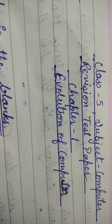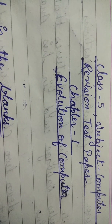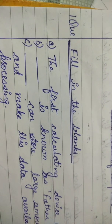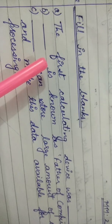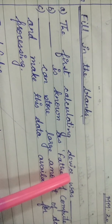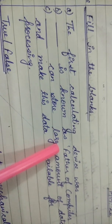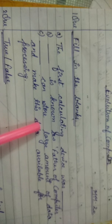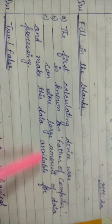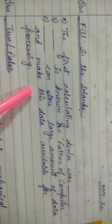This is the first revision test paper of Chapter 1, Evolution of Computer, for Class 5. First question is fill in the blanks. Number one: The first calculating device was ____. Number two: ____ is known as father of computer. Number three: ____ can store large amounts of data and make this data available for processing. Each fill-up carries one mark, for a total of three marks.